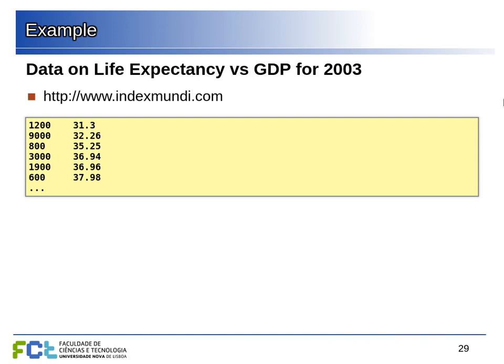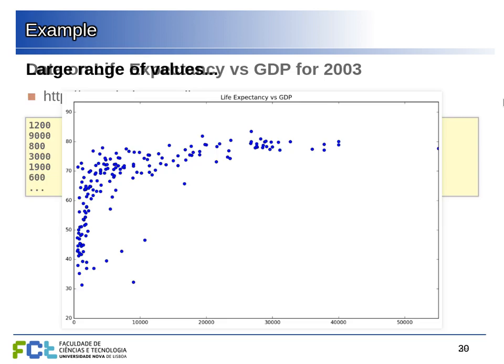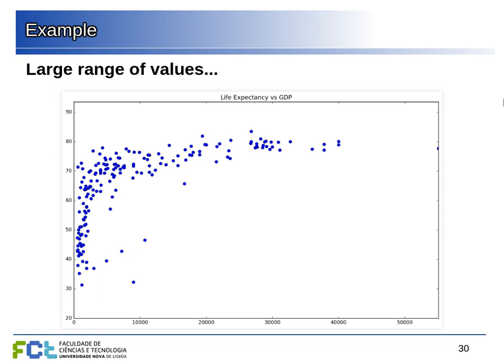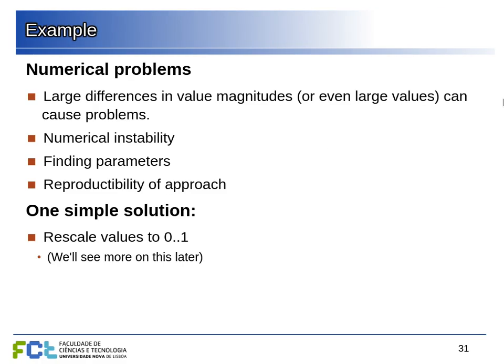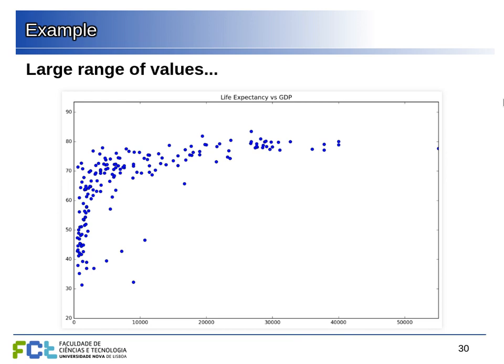Let's look at a practical example. We have data on life expectancy and gross domestic product for different countries in the year 2003. Plotting the data, the x-axis is GDP per capita and the y-axis is life expectancy. We want to fit a model to this data. One thing we notice immediately is the very different scales: life expectancy goes up to around 80–90, while GDP per capita goes up to 50,000.